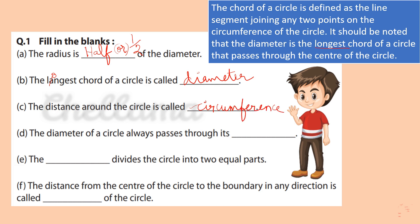The diameter of a circle always passes through its center. Correct. The dash divides the circle into two equal parts — diameter.